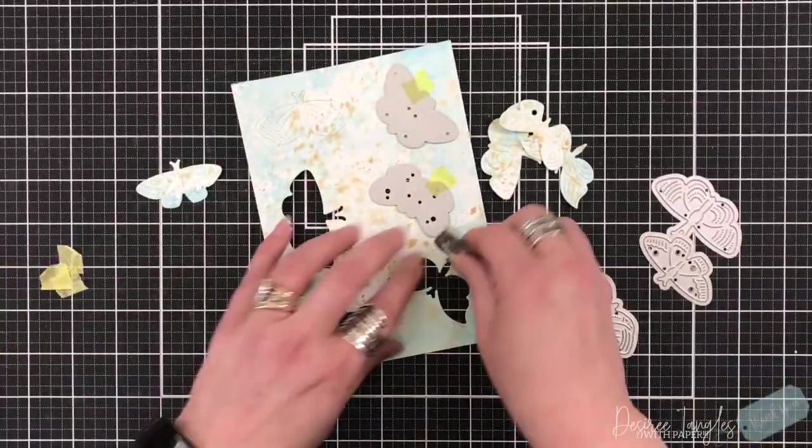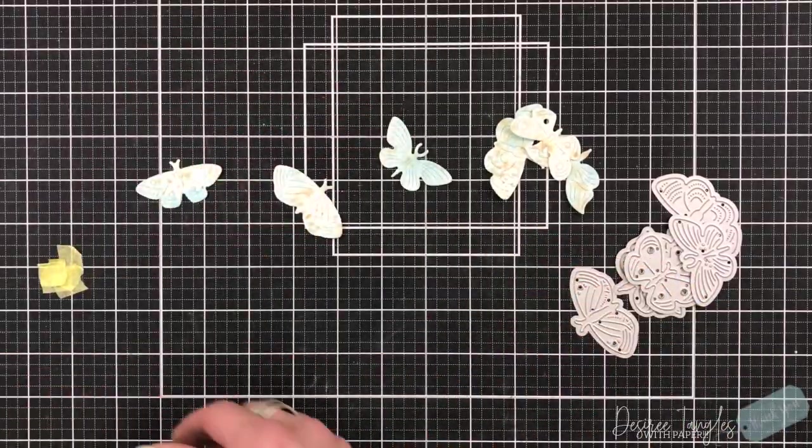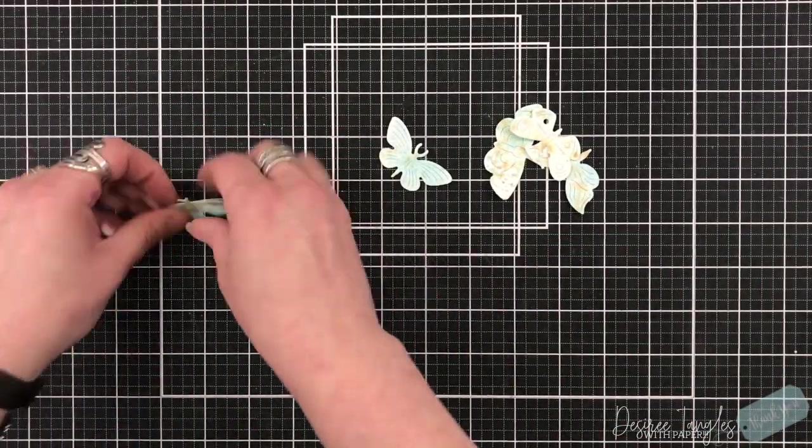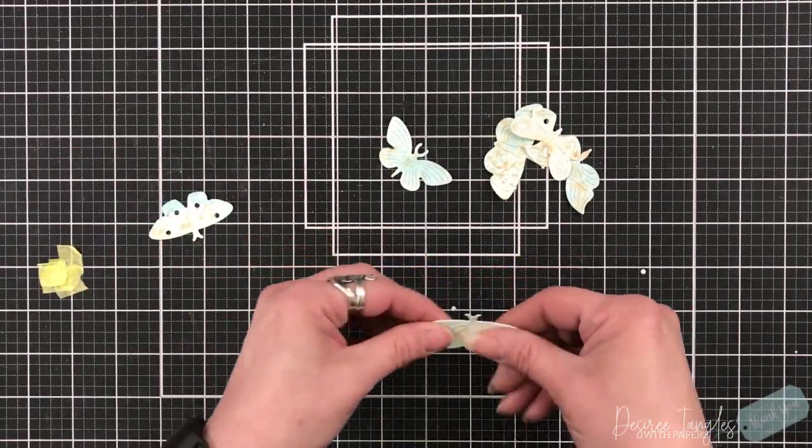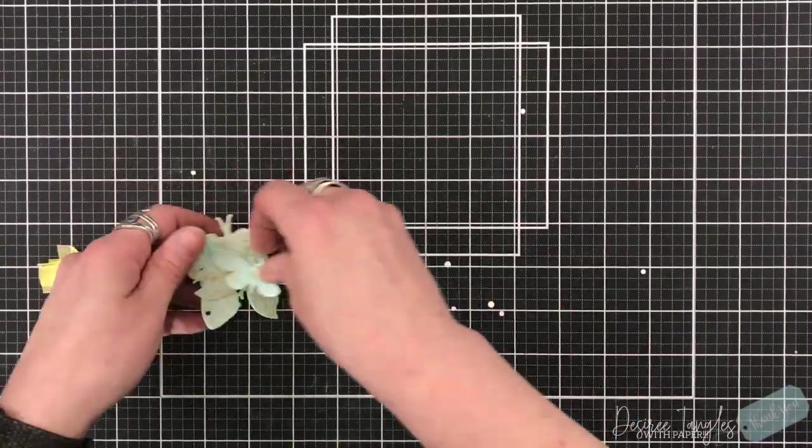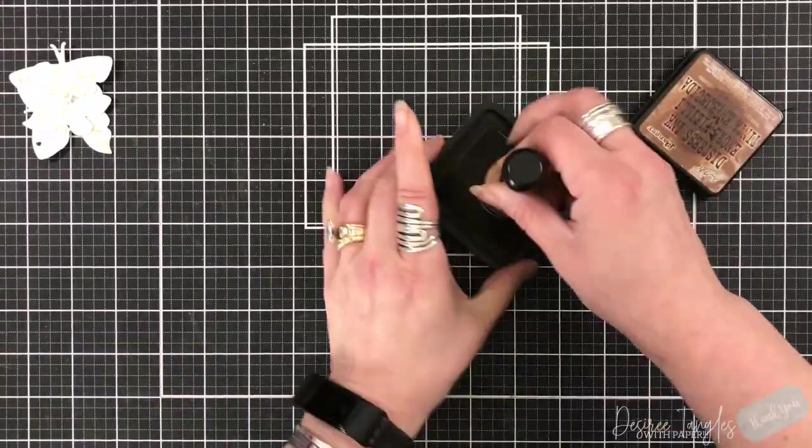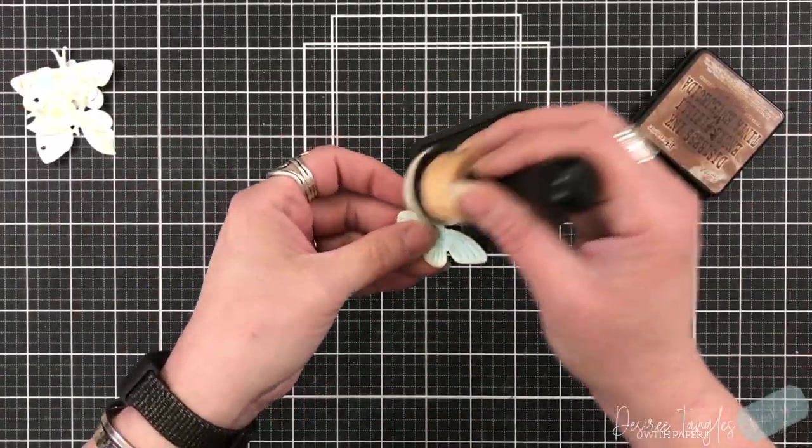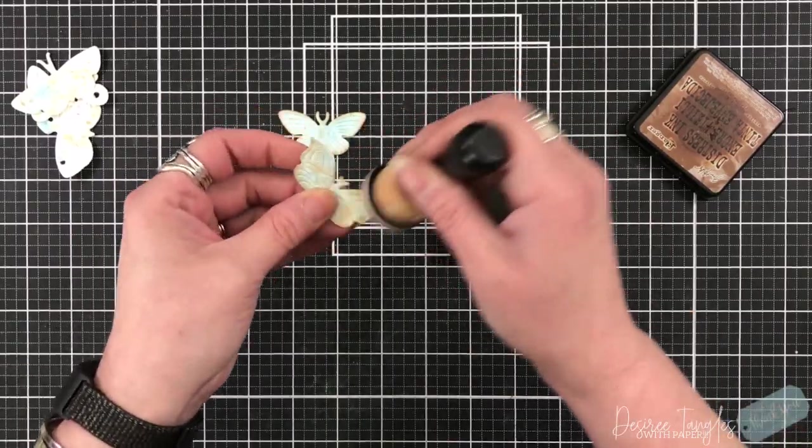This is what they look like die cut. What's great is there's some etched lines in these, hence the name. Some of them have dots or circles that are cut out as well, so you could layer them if you choose. But I really just like the look of this mottled ink in behind and I wanted it to be soft.